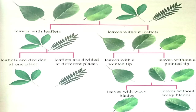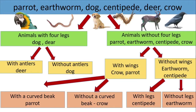The leaf with the pointed tip goes under leaves with a pointed tip category, and the other two leaves go under leaves without a pointed tip category. There are two leaves under leaves without a pointed tip category, and they can also be categorized into two classes according to the types of blade that they have. One leaf goes under leaves without wavy blades, and the other leaf goes under leaves with wavy blades. That is how we can classify the above leaves using a dichotomous key. Now let's move on to another classification of animals.